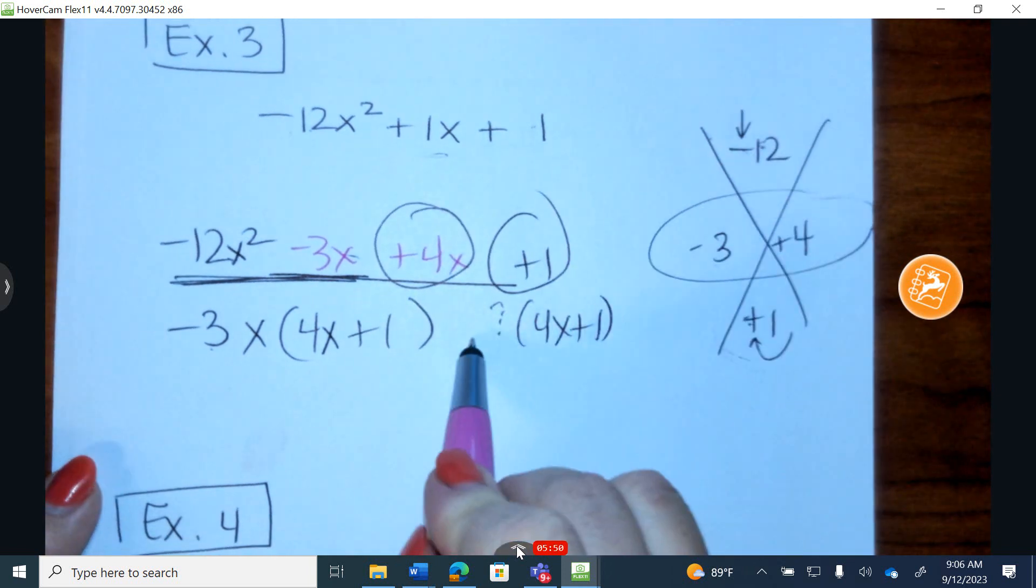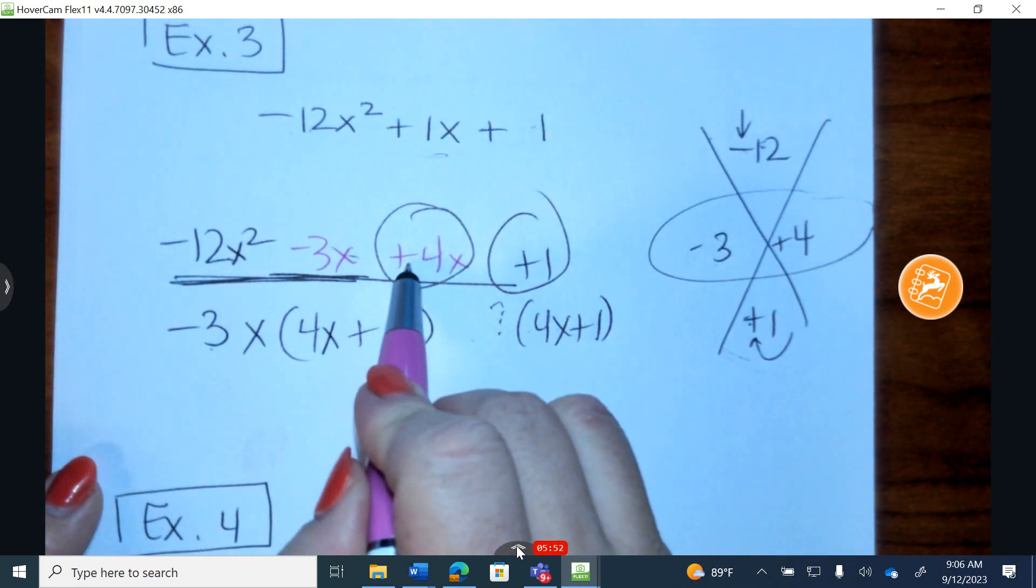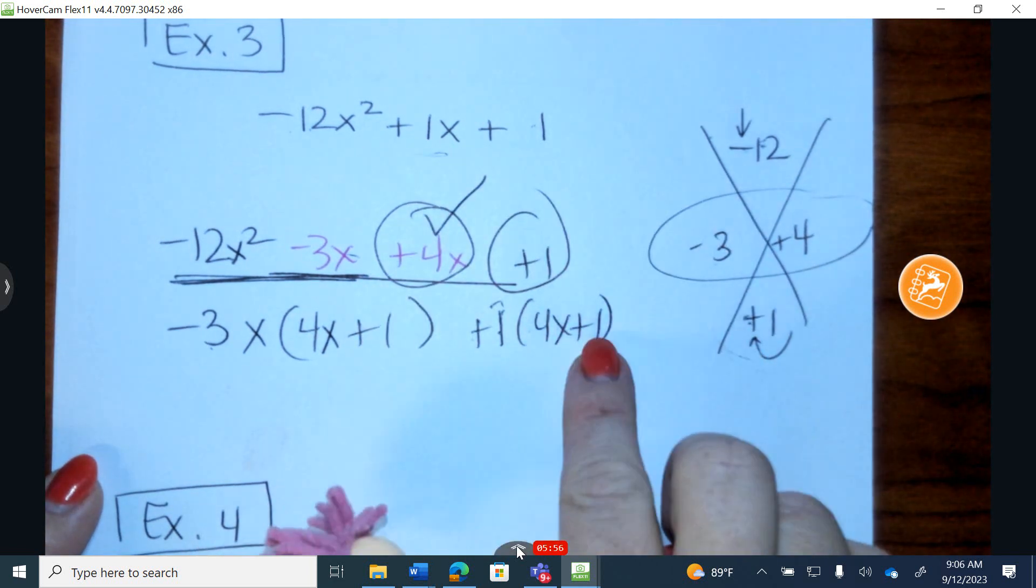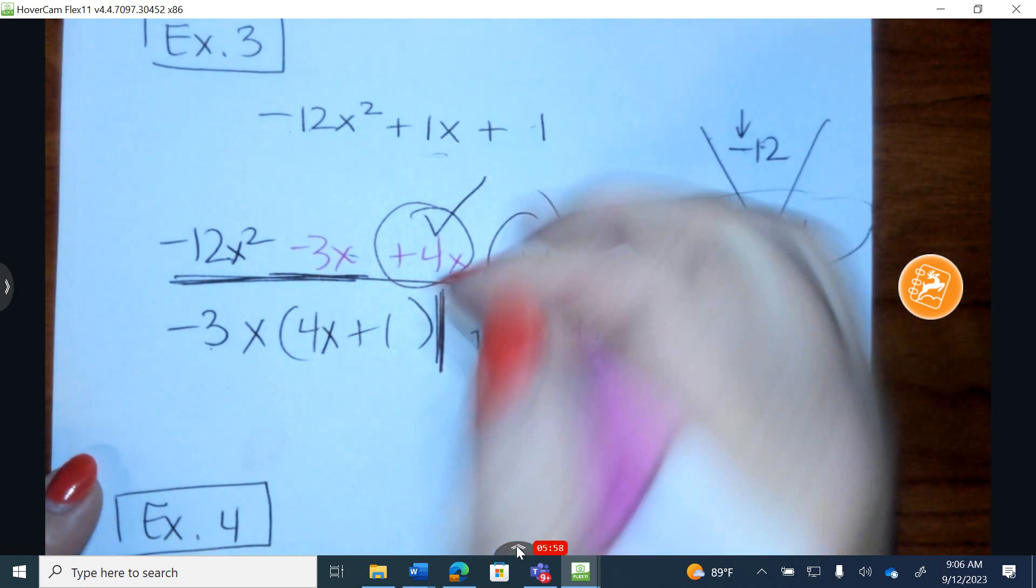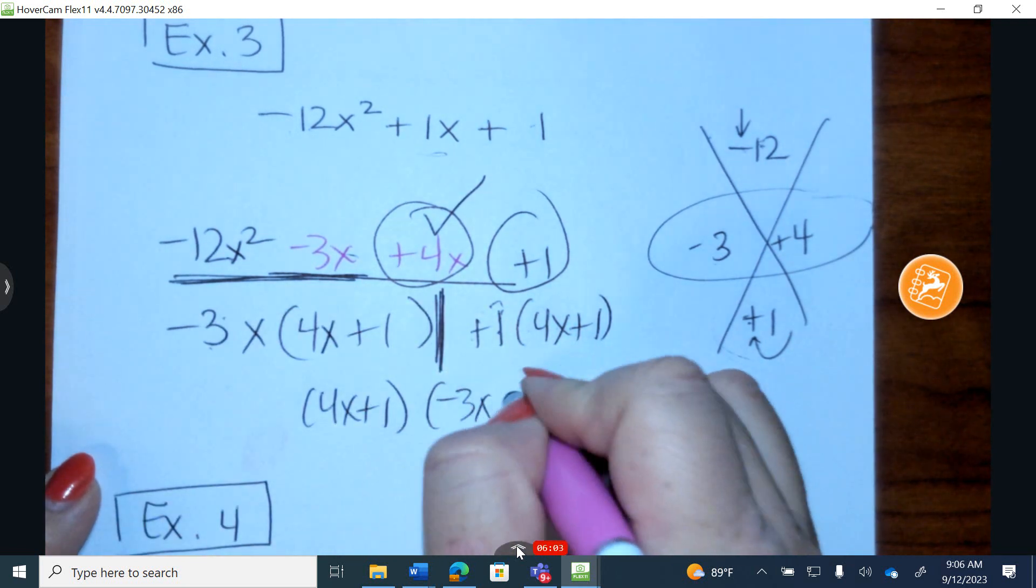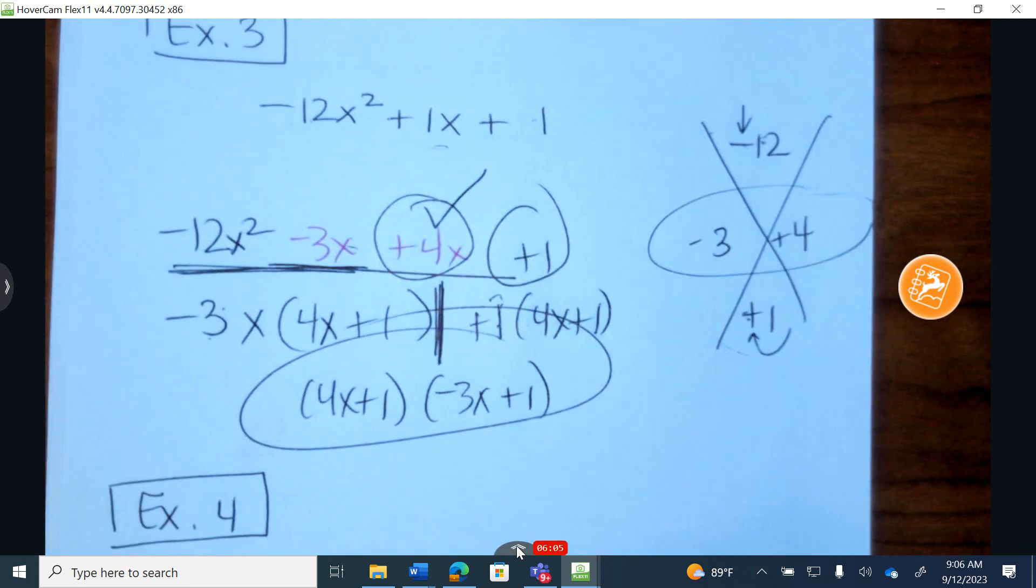I'm going after the last two terms. What times 4x equals positive 4x plus 1? Is plus 1 times plus 1? 1. It is. What do they have in common? The parentheses 4x plus 1. What's in front of the first? What's in front of the second? We're done.